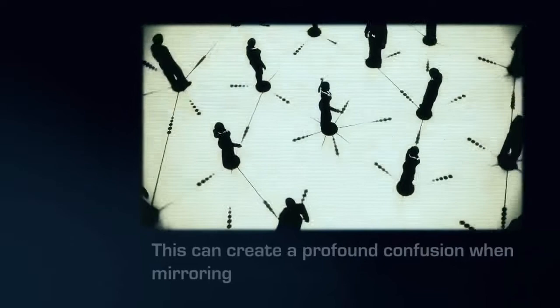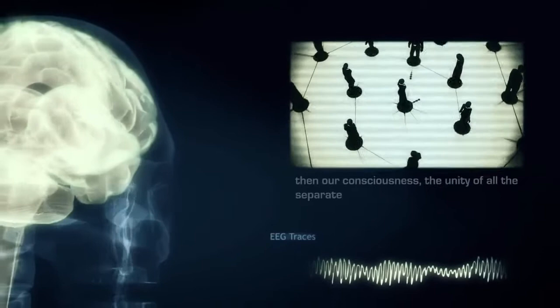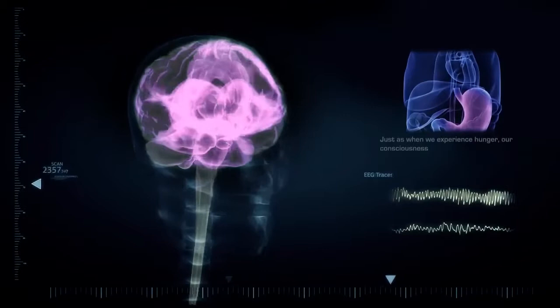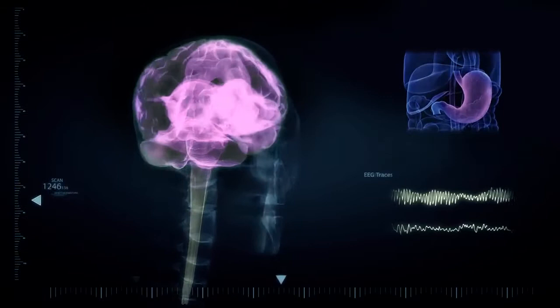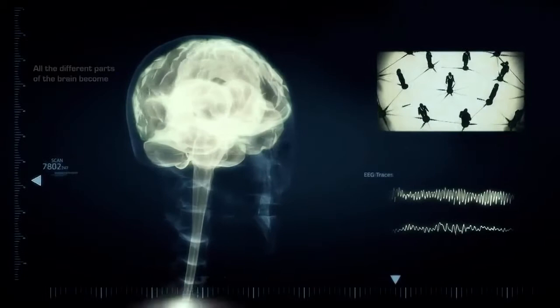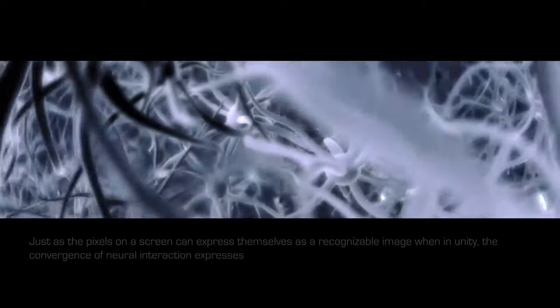This can create a profound confusion when mirroring others. When the neural connections that physically define our belief system are not strongly developed or active, then our consciousness, the unity of all the separate active circuits at that moment, may consist mainly of activity related to our mirror neurons. Just as when we experience hunger, our consciousness consists mostly of other neural interactions for consuming food. This is not the result of some core self giving commands to different cerebral areas. All the different parts of the brain become active and inactive and interact without a core. Just as the pixels on a screen can express themselves as a recognizable image when in unity, the convergence of neural interaction expresses itself as consciousness.